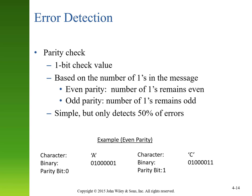Parity check is a very simple technique, but it only detects around 50% of errors. If one bit flips, you'll know. But if two bits flip, you won't — you'll still have an even number of ones. If three bits flip, you'll know. If four bits flip, you won't. So this is not a particularly accurate way of detecting errors.